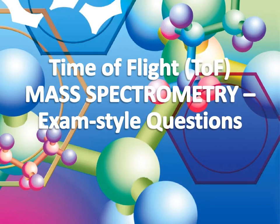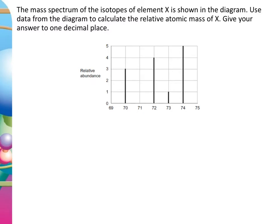So we're going to start off fairly gently. We're given a mass spec graph. The x-axis represents m/z values — mass over charge values — and we've got relative abundance. Notice our scale goes up to five and we've only got four peaks. The total abundance is not going to add up to 100. We are not talking about relative abundance in terms of percentages here, so we've got to avoid that autopilot of putting 100 as your denominator in your calculation.